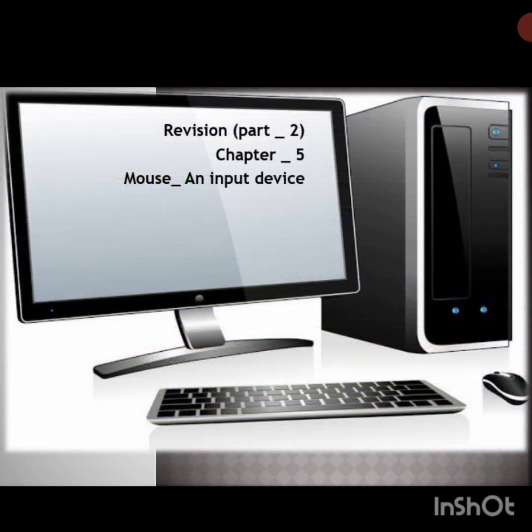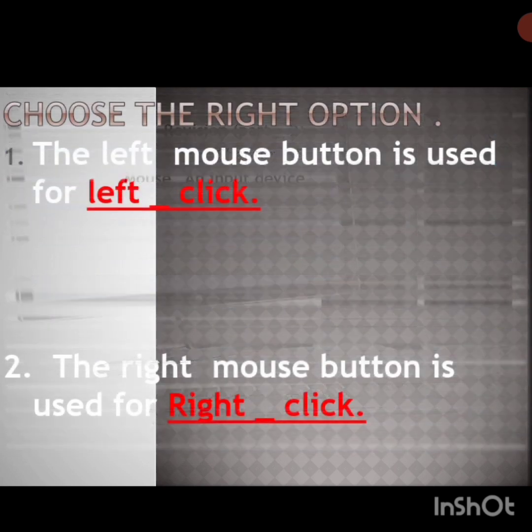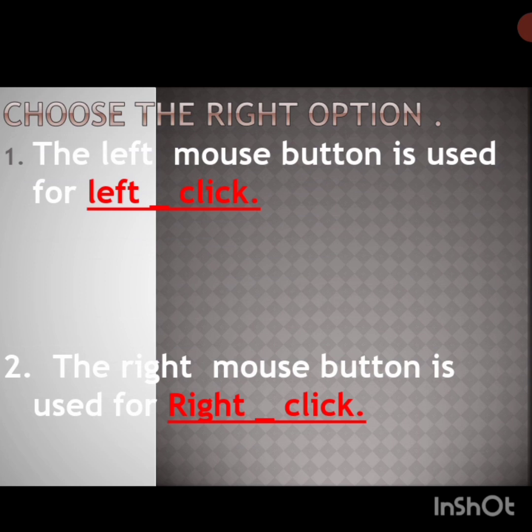Hello children, welcome back to the class. Let's continue the revision from Chapter 5: Mouse and Input Devices. Choose the right option. The left mouse button is used for — click. The left mouse button is used for left click.